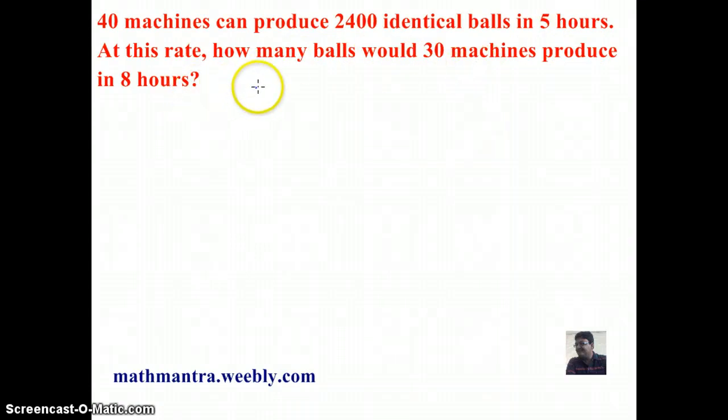So, here we have three things: the number of balls, time, and machines. Let's see the relation between each one of them. Starting with the number of balls produced and the number of machines used. If I increase the number of machines used, the production will also go up. And if I decrease the number of machines, the production of balls will also go down, which means that the balls produced is directly proportional to the number of machines used.